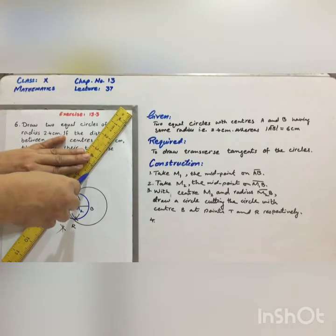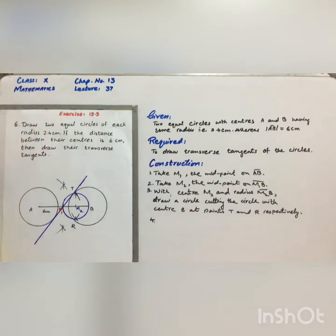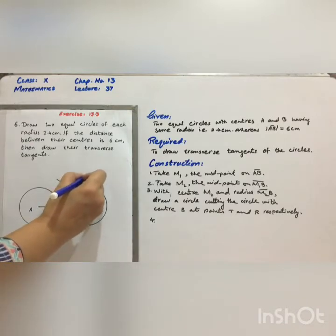Join T to M1 and produce to meet the circle with center A at point R dash. It is a tangent line.